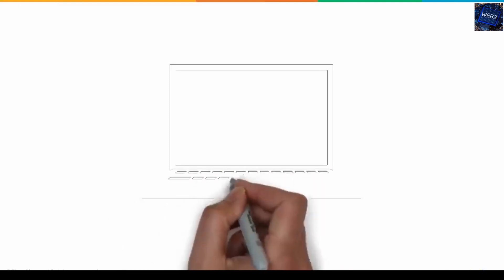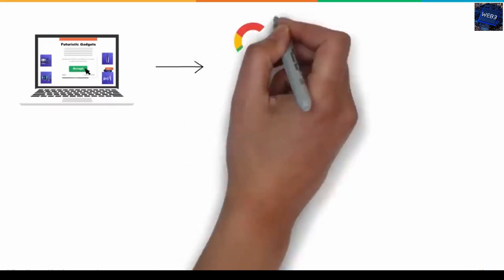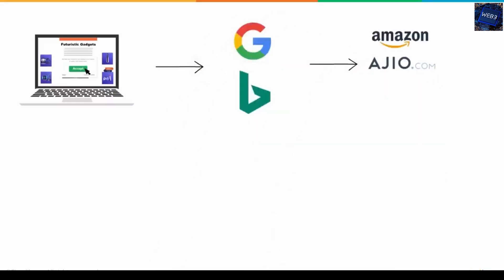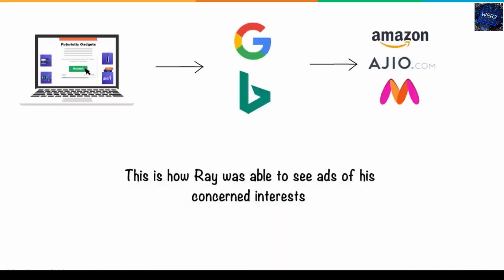He further added that when we seek out information or data of any kind from any web platforms present on the internet, simultaneously unknowingly, we also provide them with information related to our choices and interests, which are stored in cookies, which later they sell to various companies who make use of this data to advertise exactly what you are looking for. And this is how Ray was able to see ads of his concerned interests.